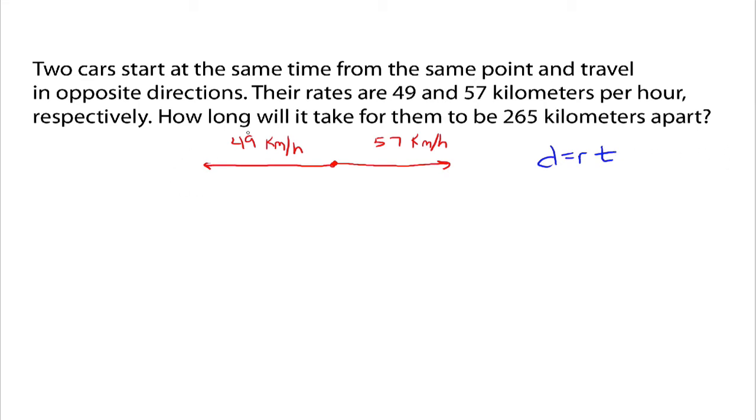So, we know the rate for each one of these. We know the distance we want them to be, right? Which is apart. We know the distance we want them to be apart, which is 265 kilometers. Alright, so what we're looking for is time. How long will it take for them to be 265 kilometers apart? So, we're looking for T, right?